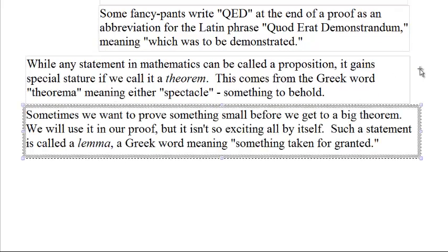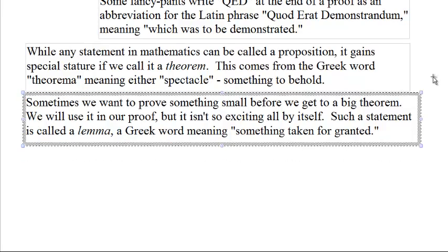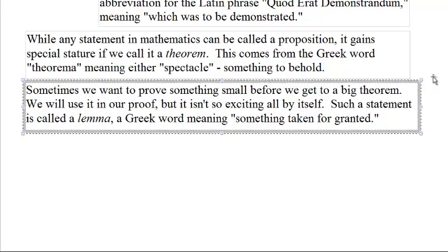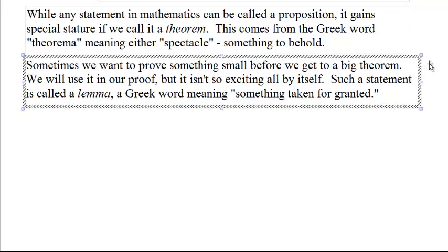Sometimes we want to prove something small before we get to a big theorem. We're going to use it as a stepping stone, and it usually tends to be kind of long and tedious to prove, but it's not all that exciting all by itself, so you don't call it a theorem — you call it a lemma, which comes from the Greek word lemma, meaning something taken for granted. They don't get very much respect, lemmas. There will be one later on in this series of videos.